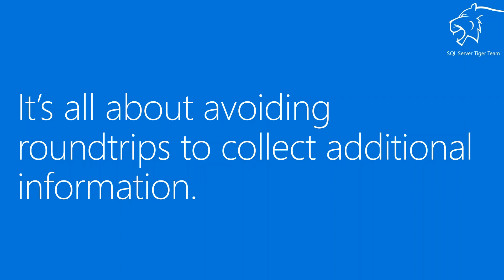Another topic we hear a lot about is the number of round trips needed to collect additional information. Someone sends you an actual execution plan but you don't have enough context — were trace flags enabled that might change execution context? What memory was available? What are the data types of parameters? There are many context items very relevant for proper query analysis, requiring you to go back and ask someone to collect data from DMV A, B, or C. I've done a lot of work to avoid some of these round trips.